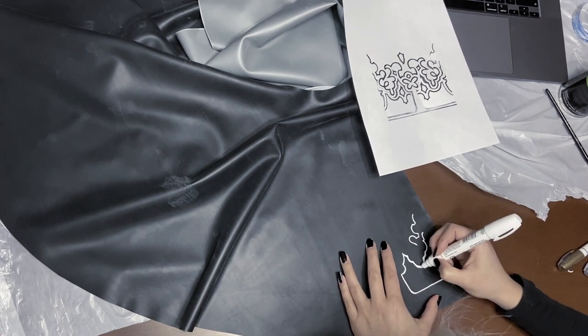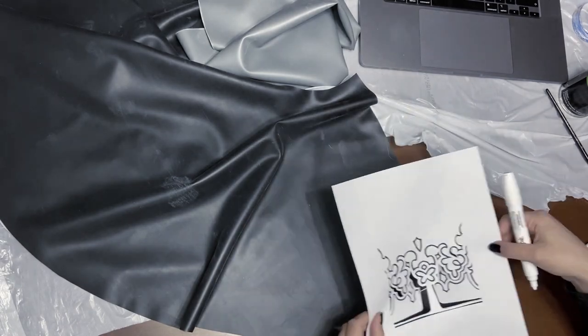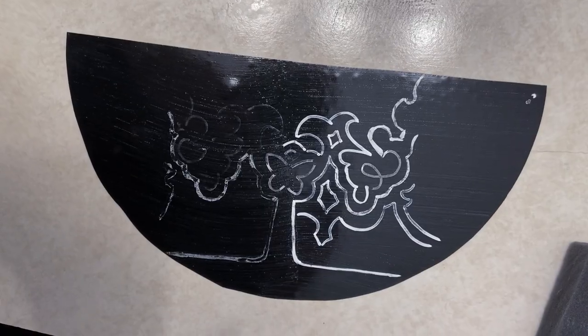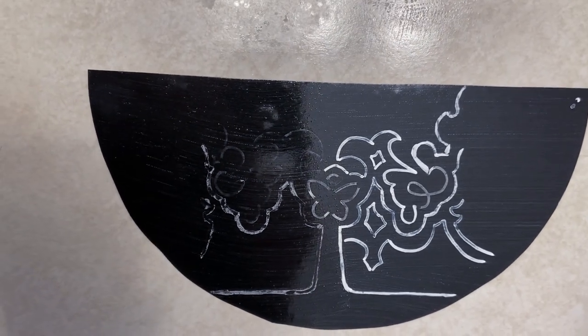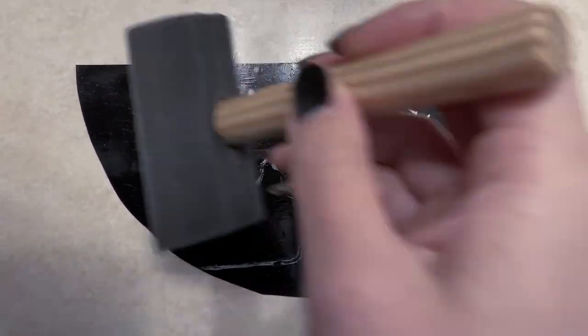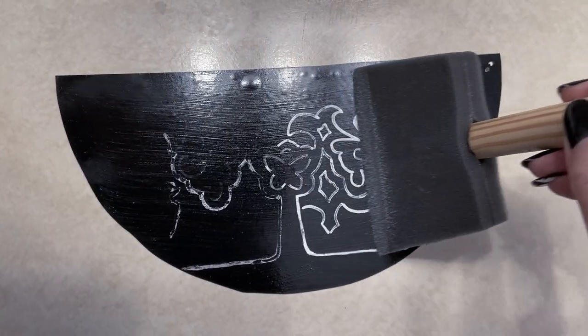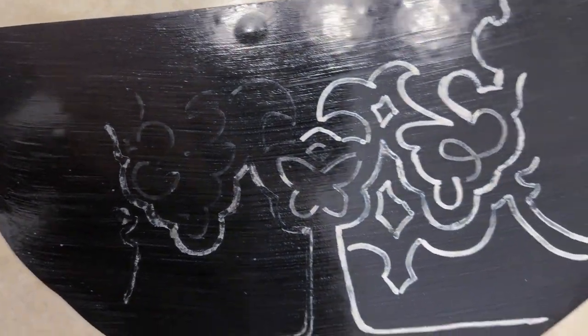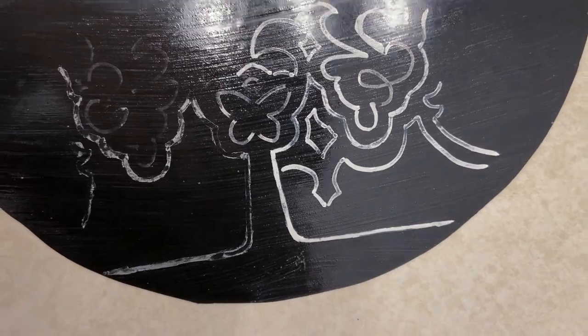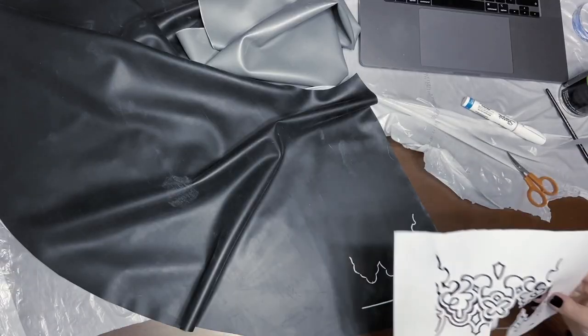Latex is a natural material and oil will actually cause the latex to break down over time. I tested out the silver and the white sharpie to see if they differ when it comes to durability. Unfortunately the silver marking rubbed off almost immediately after polishing which is a bummer since I would have wanted to have a more subtle design for the skirt but I think the white looks good as well.